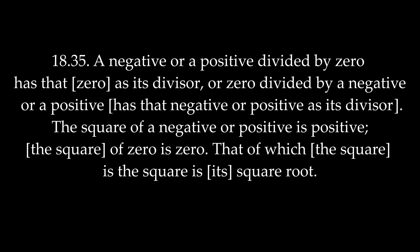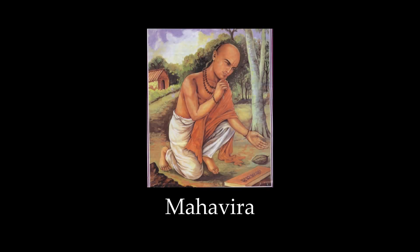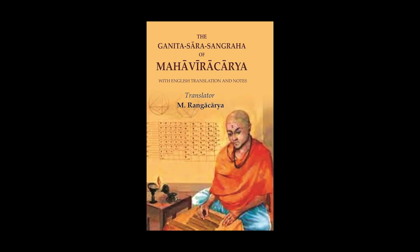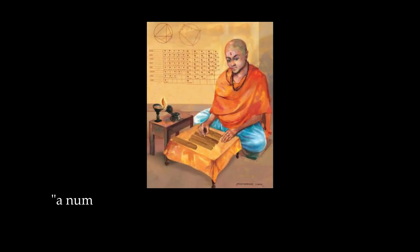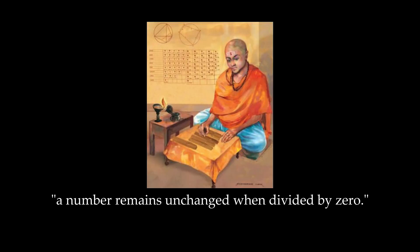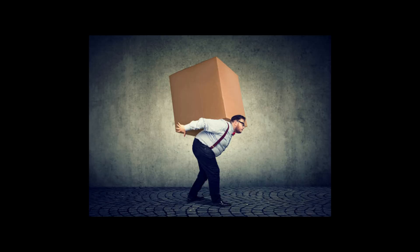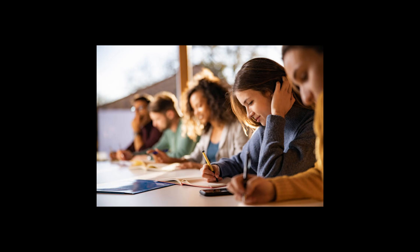The square of a negative or positive is positive. The square of 0 is 0. That of which the square is, its square root. Later, in 850 AD, another Indian mathematician, Mahavira, had something else to say. In his work Ganita Sarasangraha, he says something rather interesting about 0: a number remains unchanged when divided by 0. This effectively gives a value of nothing to 0 — it's like if you tried to push a heavy box by looking at it, or taking paper notes in a class without a pencil. Nothing is changed about the box or the paper.